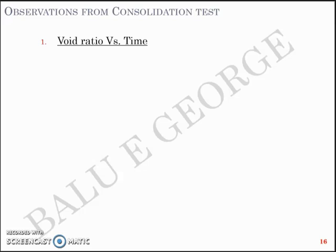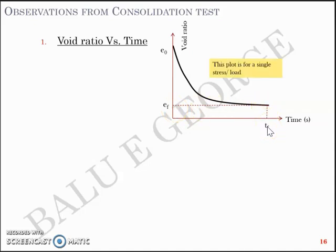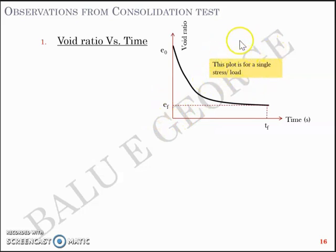Now we'll continue our discussion on a few observations from the consolidation test. The first observation is void ratio versus time. When you plot the void ratio of soil versus time taken, you'll have a plot where there is an initial void ratio E0 which gets reduced over time and attains what we call EF, or final void ratio, corresponding to one load. This plot is for a single load increment. As time progresses the void ratio decreases, which means the soil consolidates and settles, attaining a final void ratio corresponding to one particular load increment.